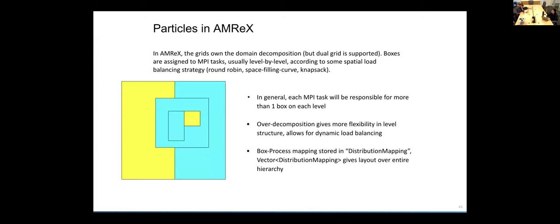For domain decomposition, we would assign those boxes, as Weichan was saying, to different MPI ranks. So here, yellow is rank zero, and blue is rank one. And in general, an MPI task can be responsible for processing multiple boxes. So what we have with particles is particles that live on a structure like that.